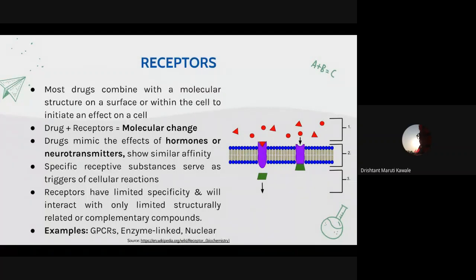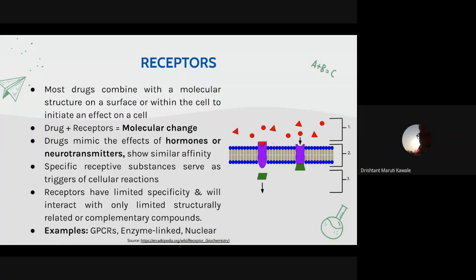The combination of drug and receptor results in a molecular change in the receptor, such as an altered configuration or charge distribution, thereby triggering a chain of events leading to a response. All receptors with which drugs combine are receptors for neurotransmitters first, then hormones and other physiological substances. Thus, the discovery of a specific receptor for a group of drugs can lead to discovery of unknown endogenous substances that combine with the same receptor.